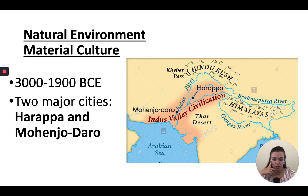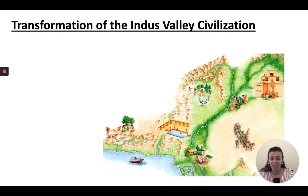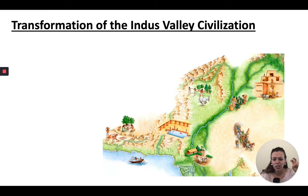We know they traded with Mesopotamia and Southeast Asia. We know they grew wheat, barley, peas, melon, and sesame. But then they disappear — the cities are just abandoned around 1900 BCE and we don't really know why. There's this idea of a system failure — some sort of breakdown between the fragile relationship between political, social, and economic systems.